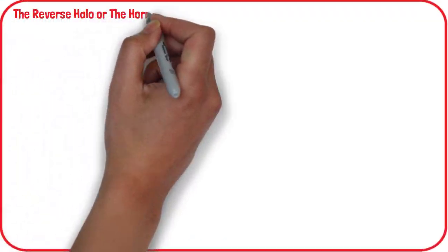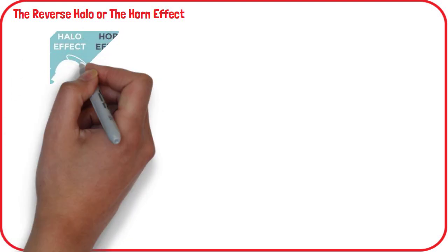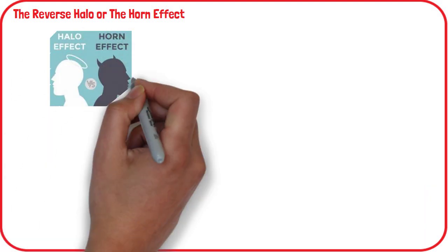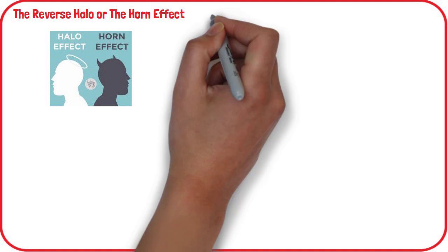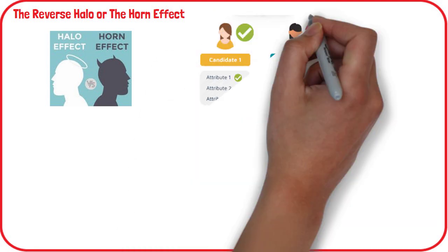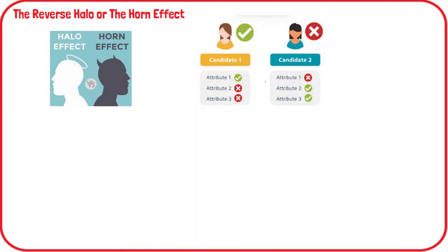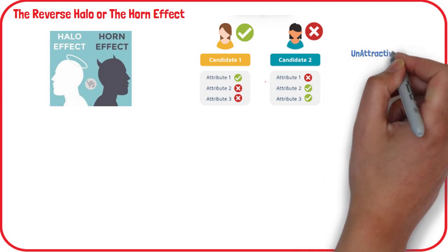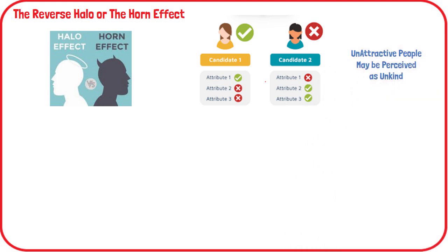The reverse halo, or the horn effect: as the name implies, the reverse halo effect occurs when a person judges another negatively based on only one known characteristic. That single trait can overshadow all of the other qualities. For example, a person might assume that someone they view as unattractive is also unkind.